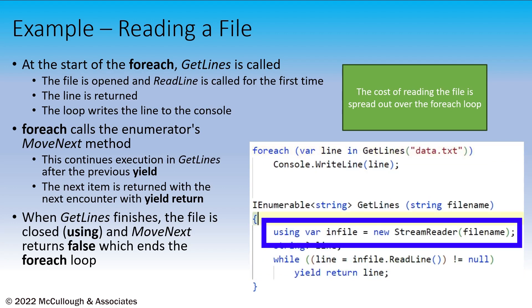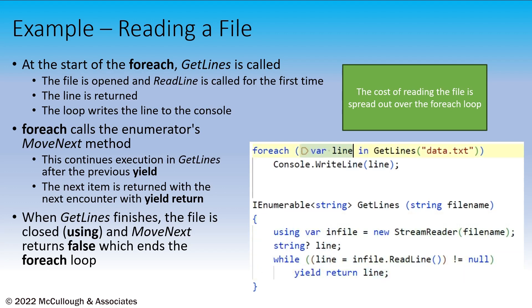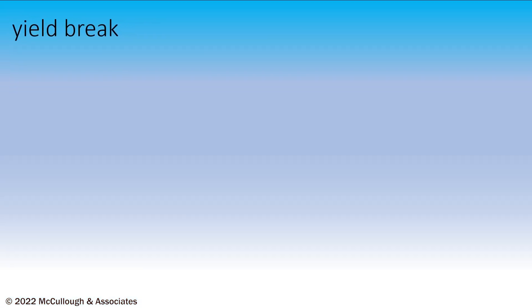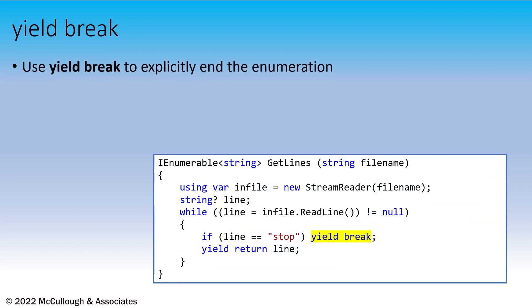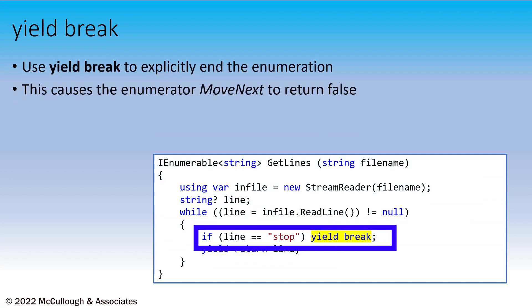When the end of that method is reached, C# will automatically execute a yield break. This tells the enumerator that there are no more elements. We can also do this explicitly. In this example, reading from the file until we get to the end, or if we encounter a line containing the word stop. If that happens, we also dispose of the input file and explicitly signal the foreach, or the iterator, that we're done, and there are no more elements.